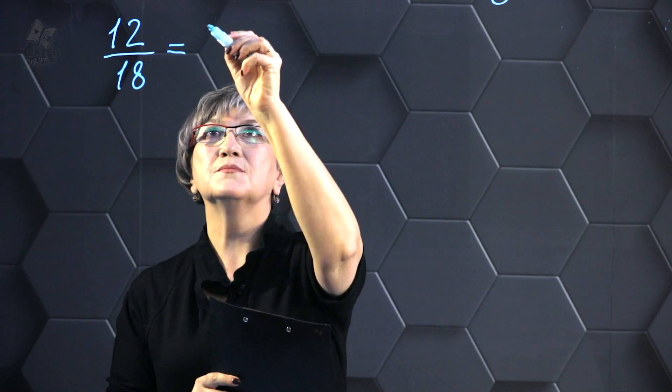The only thing is, every time you need to verify whether this fraction can be simplified or not. Let's start with our example, 12 and 18. 12 and 18 can be divided by 2.